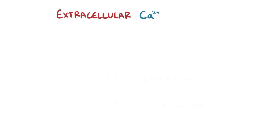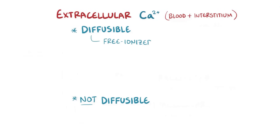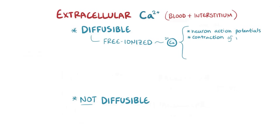Now the majority of the extracellular calcium — the calcium in the blood and the interstitium — is split almost equally between two groups: calcium that's diffusable and calcium that's not diffusable. Diffusable calcium is separated into two subcategories: free ionized calcium, which is involved in all sorts of cellular processes like neuronal action potentials, and contraction of skeletal, smooth, and cardiac muscle,